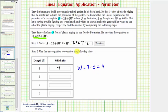So this tells us one possible dimension of the garden. It could be 3 feet by 4 feet. Next, the length is 4 feet, then L is 4. So we'd have W equals 7 minus 4, which is equal to 3.